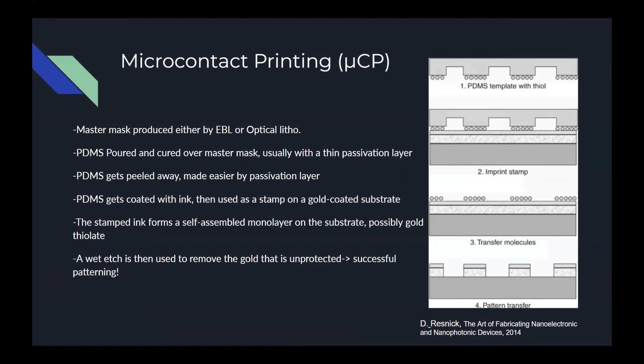The PDMS imprint is then coated with a thiol-based ink solution. This is then pressed onto a substrate that has been plated with a thin layer of gold by a deposition process, typically electroplating. The thiolate and gold form a self-assembled monolayer on the surface where the imprint is in contact with the substrate.